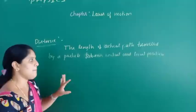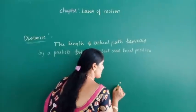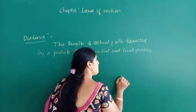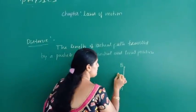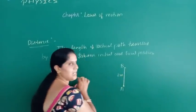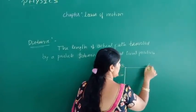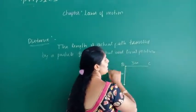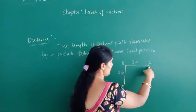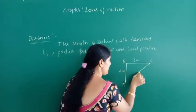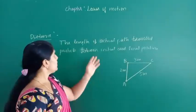For example, a particle goes from initial position A to another position B, which has a length of 2 meters. Again, the same particle moves from B to C with a distance of 3 meters, and then the particle returns back to the initial position A from C with a length of 5 meters.